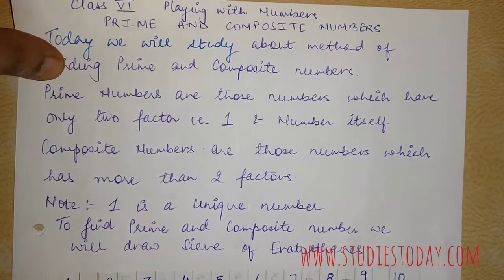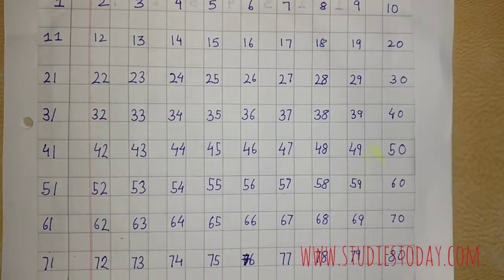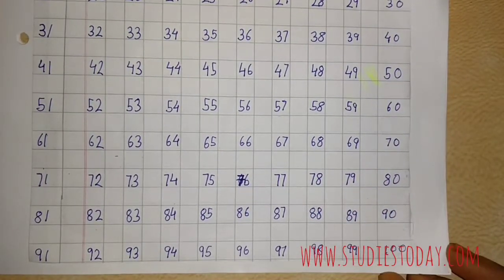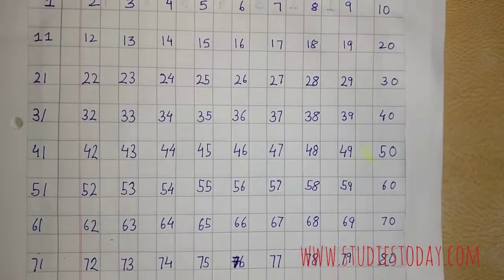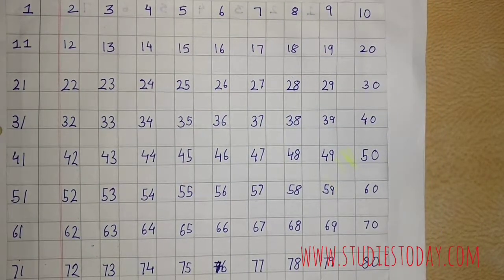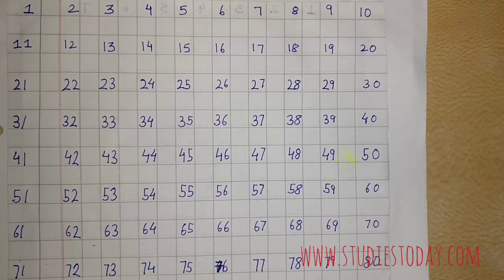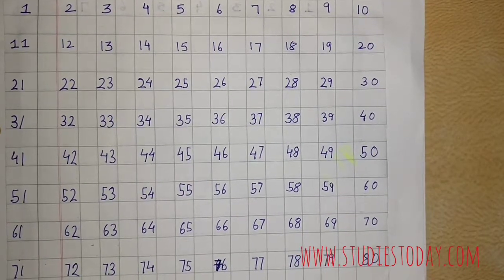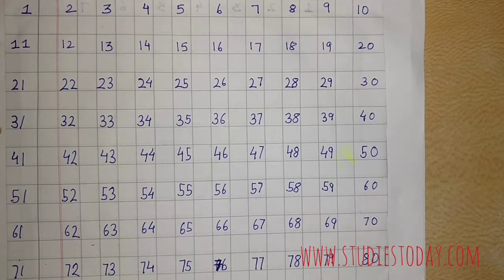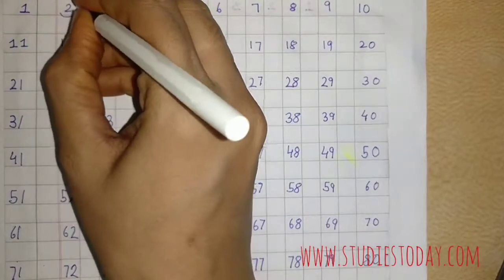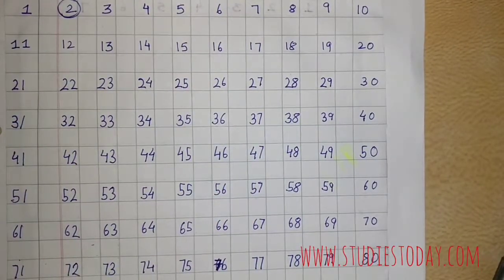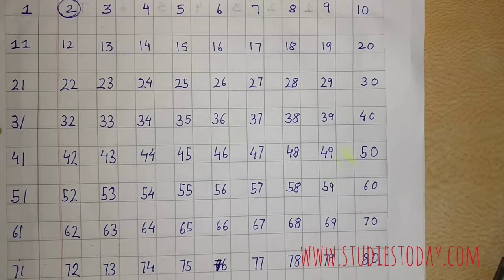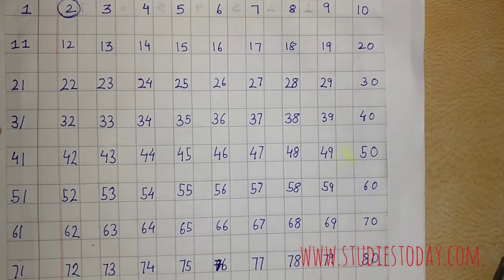I have already made a grid of the numbers from 1 to 100. Now we will start finding our prime numbers. As 1 is a unique number, I will leave that number. The second number in queue is 2. I will circle 2 because 2 has only 2 factors, 1 and 2.